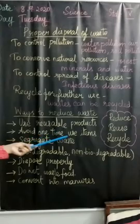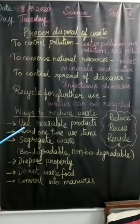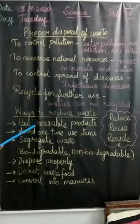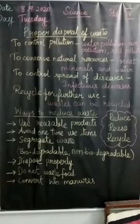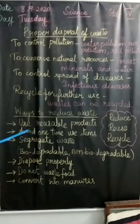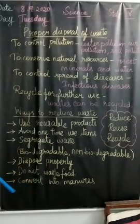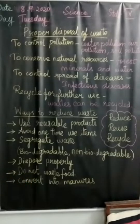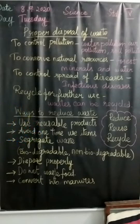We can wash cloth bags and use them again later. Next, avoid one-time use items. For example, a pet bottle — we buy water and then throw the bottle. That is also waste. Instead, we can take our own water bottle outside so that we can reuse it.